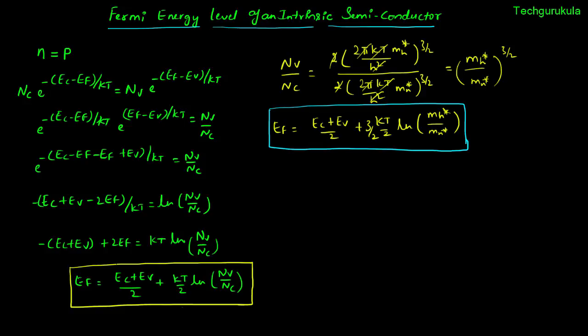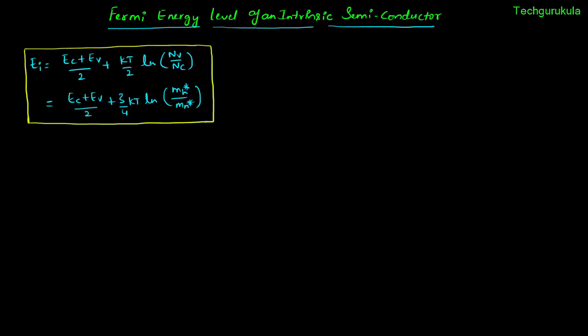The Fermi energy level derived here is the Fermi energy level for an intrinsic semiconductor. We use the term Ei in place of Ef to represent the intrinsic Fermi energy level. Ei can be represented in two forms: one with Nv and Nc, the effective density of states in the valence band and conduction band, and another in terms of the effective mass of hole and electron.